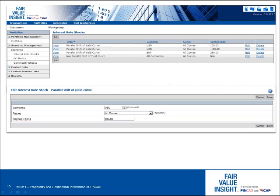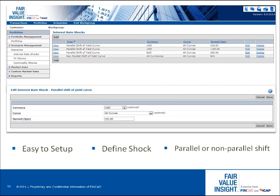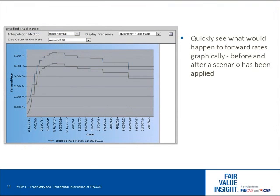Using Fair Value Insight to run a scenario analysis is easy. The user first defines what type of shock they want to conduct — this could be a parallel or non-parallel shift to interest rates, changes to FX rates, changes to commodity prices, or some combination of all of the above. Once the shocks are defined, the scenario is run against the portfolio. Within Fair Value Insight, users can quickly see what would happen to the forward rates given the chosen scenario, either as a graph or in a tabular format showing actual implied forward rates before and after the scenario has been applied.